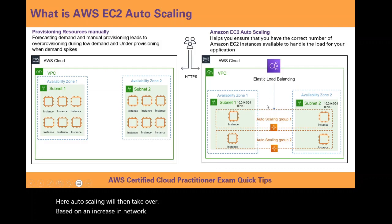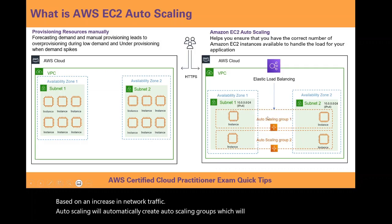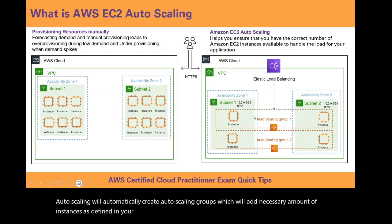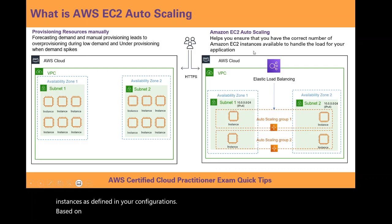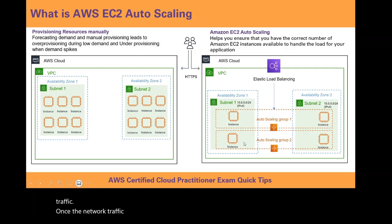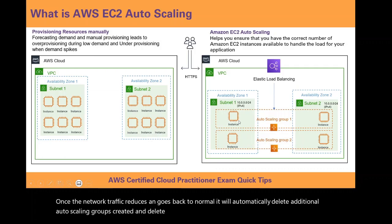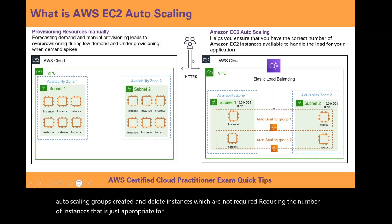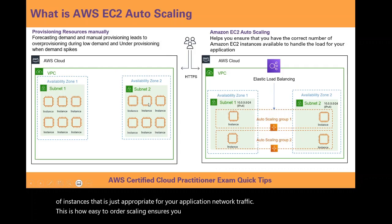Autoscaling will then take over: based on an increase in network traffic, autoscaling will automatically create autoscaling groups which will add the necessary number of instances as defined in your configurations. Once the network traffic reduces and goes back to normal, it will automatically delete additional autoscaling groups and delete instances which are not required, reducing the number of instances to just what is appropriate for your application network traffic. This is how EC2 autoscaling ensures you are never over-provisioned or under-provisioned for any network application traffic spikes or dips.